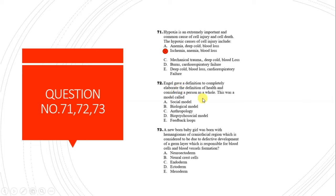Question 72: A model that completely elaborates the definition of health considering a person as a whole is called the biopsychosocial model. This is from biomedical ethics.